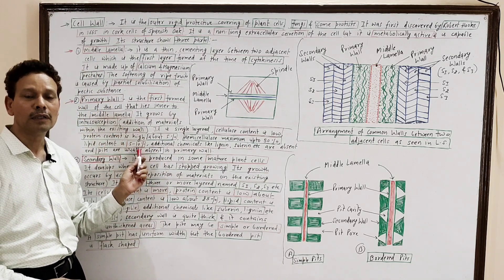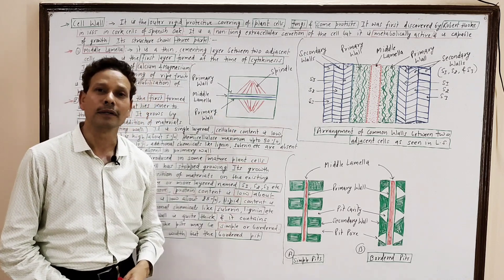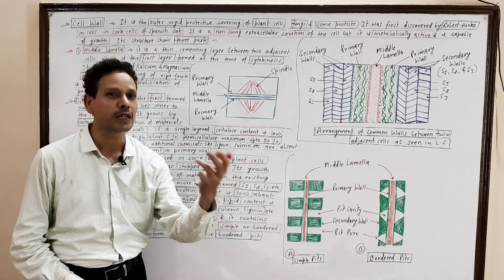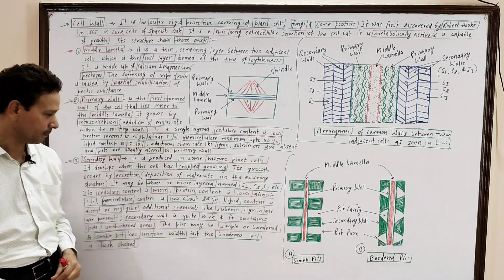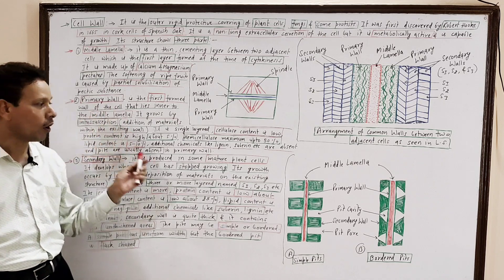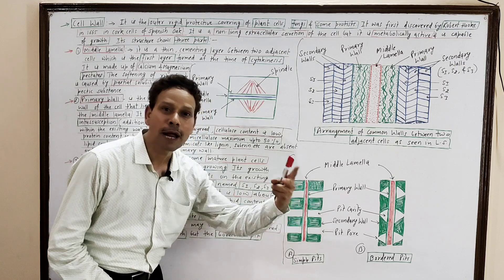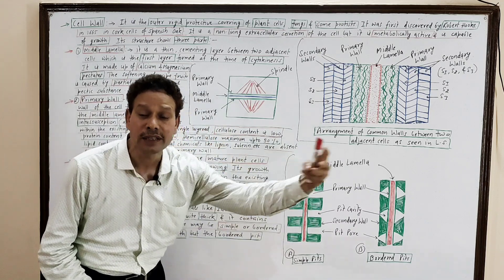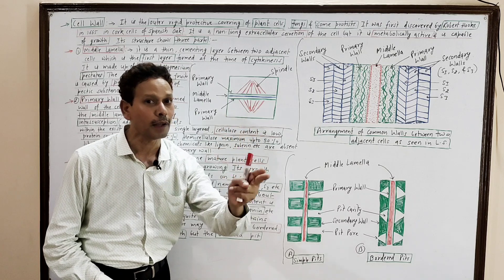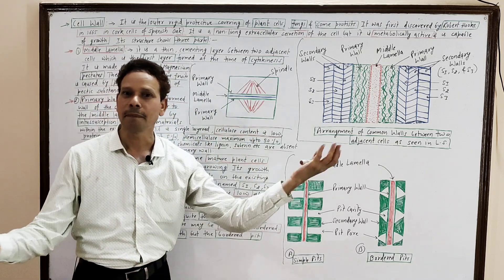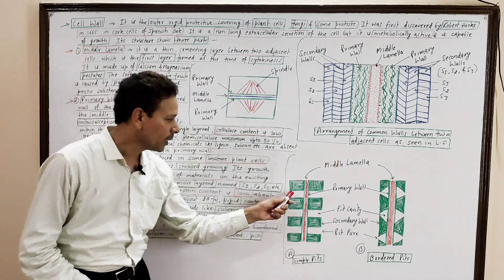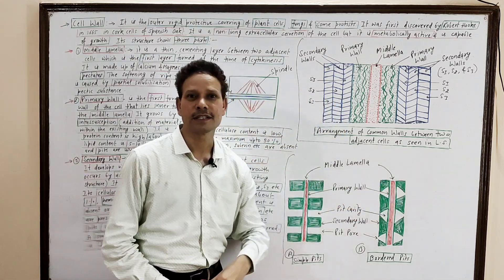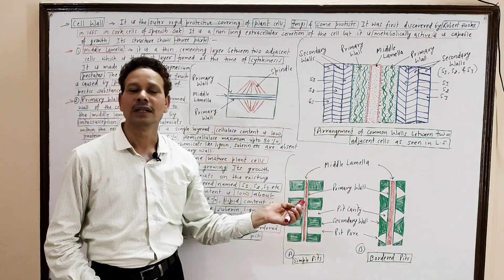In the primary wall, additional substances like lignin and suberin deposition are absent. But in the secondary wall, which is thick, deposition of additional substances like suberin and lignin occurs. In the primary wall, pits are absent, but in the secondary wall, unthickened areas called pits are present. Pits are of two types: simple pits and bordered pits. Simple pits have a uniform width, while bordered pits are flask-shaped.